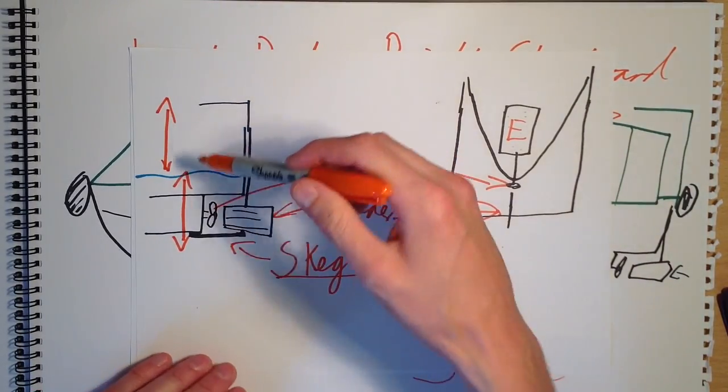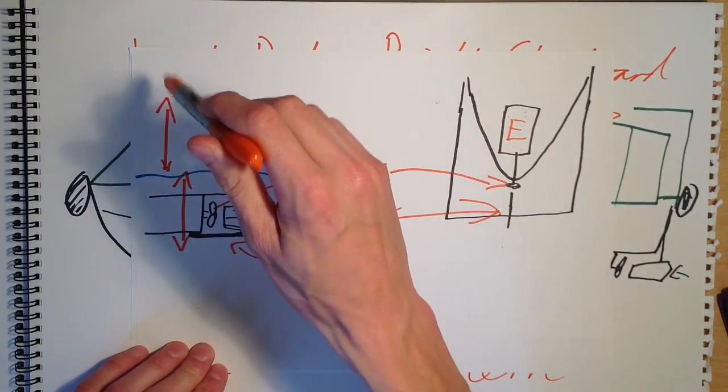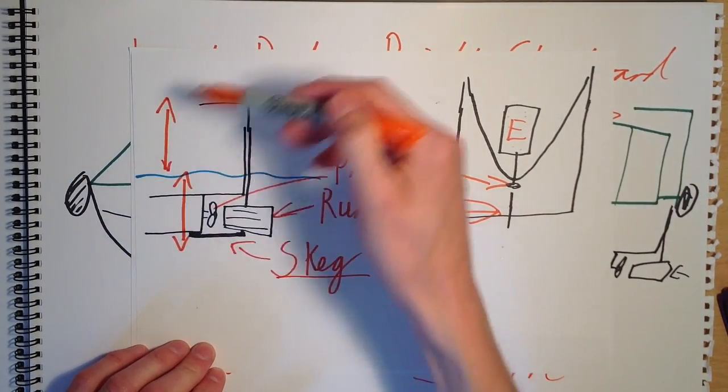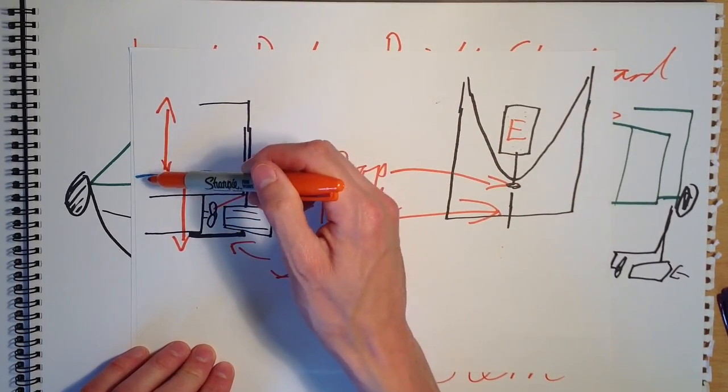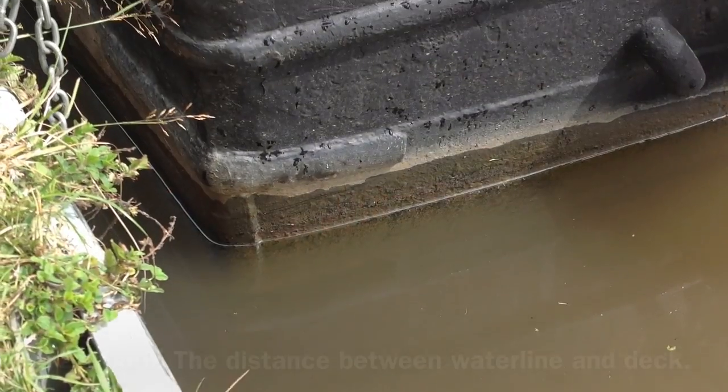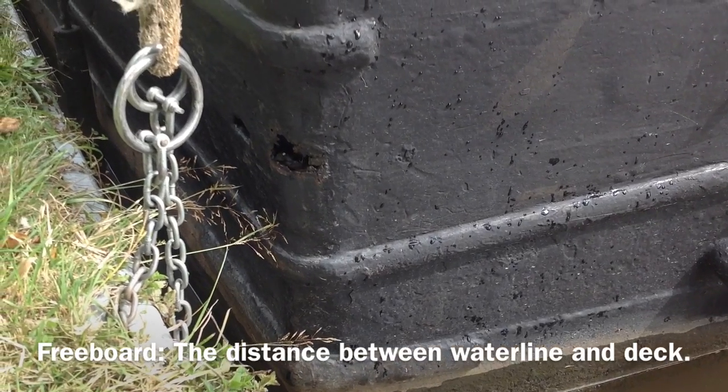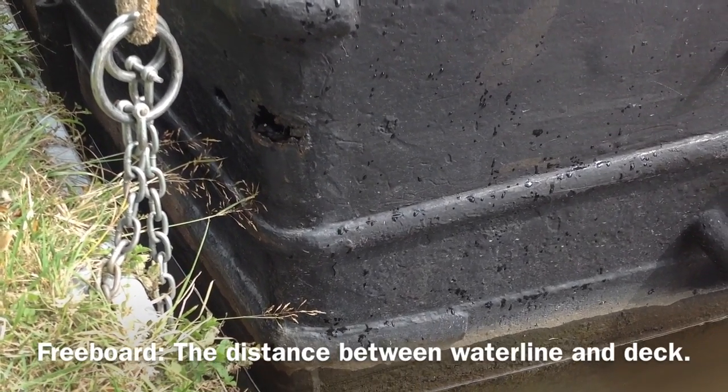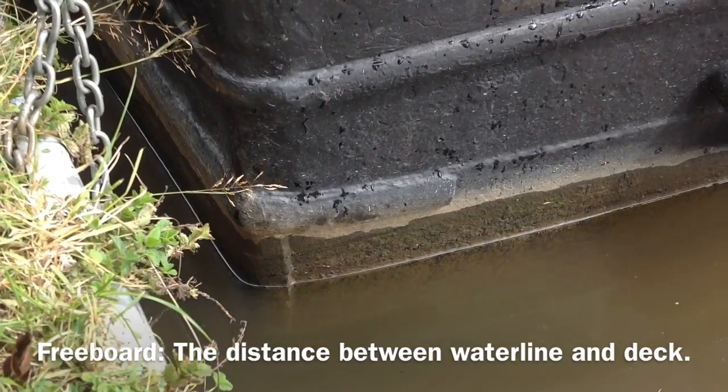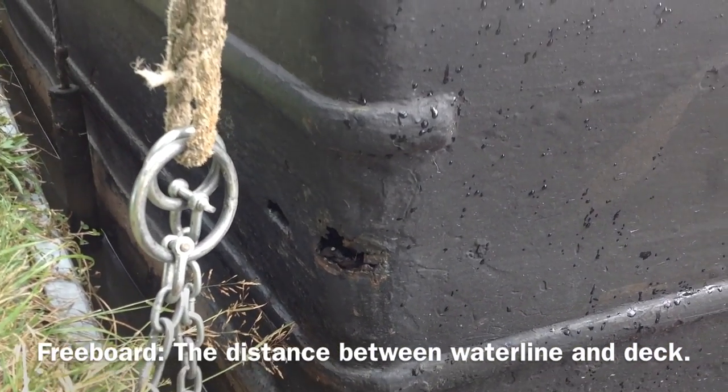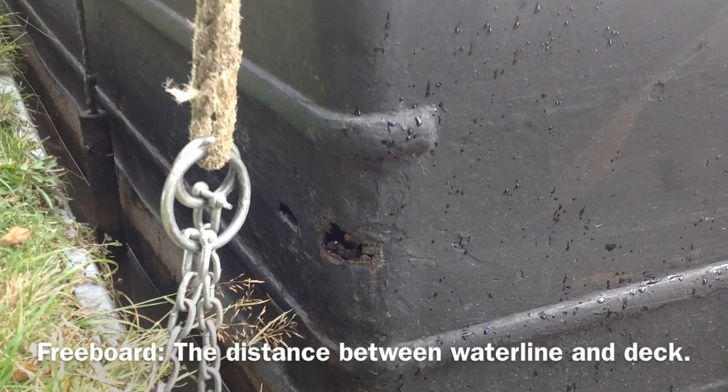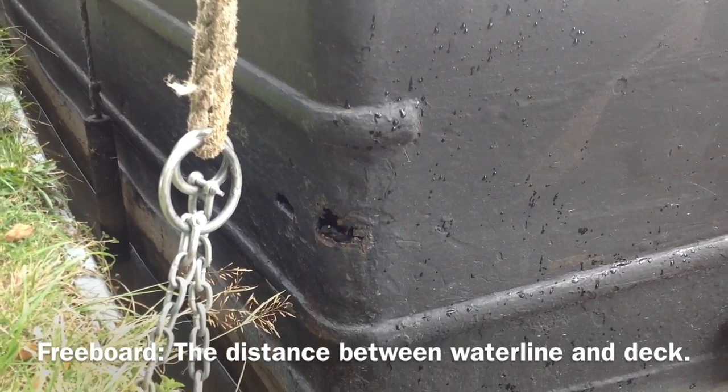So you're not measuring from the bottom of the boat to the top because that's the height of the boat overall, you're just measuring these terms from the waterline. This one far less used than the others is the freeboard and that basically refers to the distance between the waterline and here you can see we've got these drainage holes at the lowest point of the lowest deck for drainage on the boat. The freeboard being the space between the waterline and those holes there.